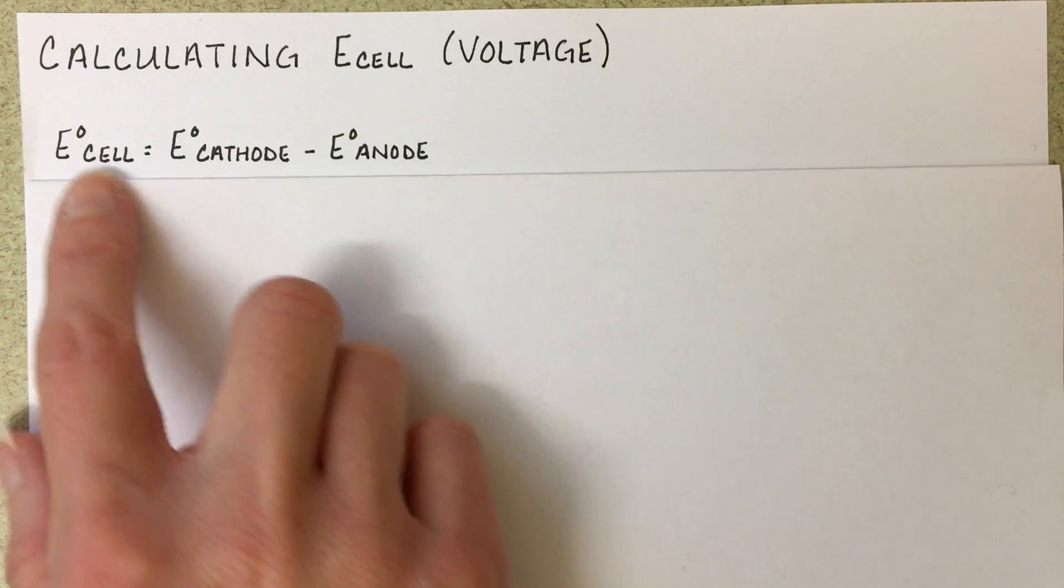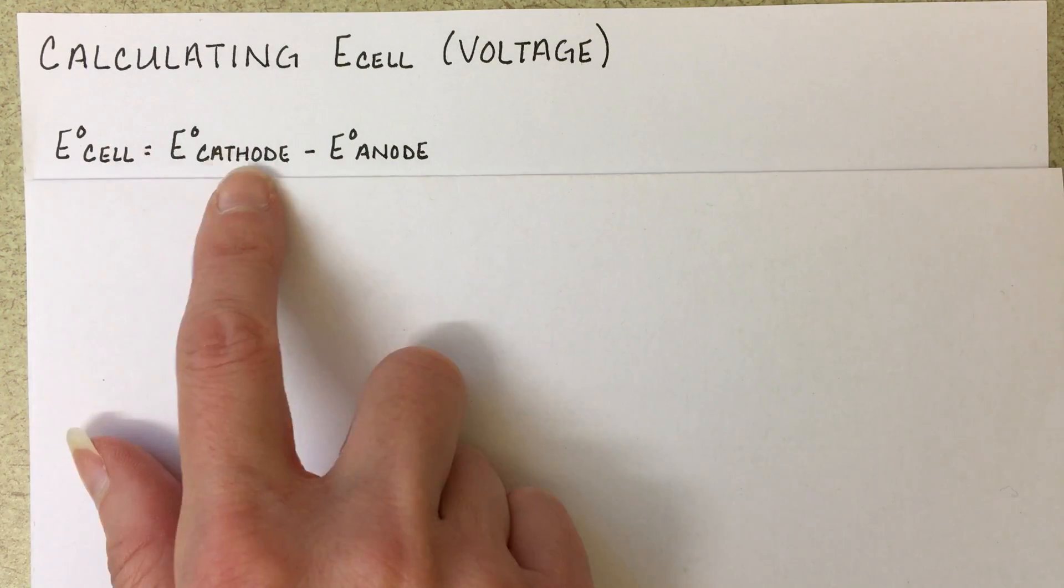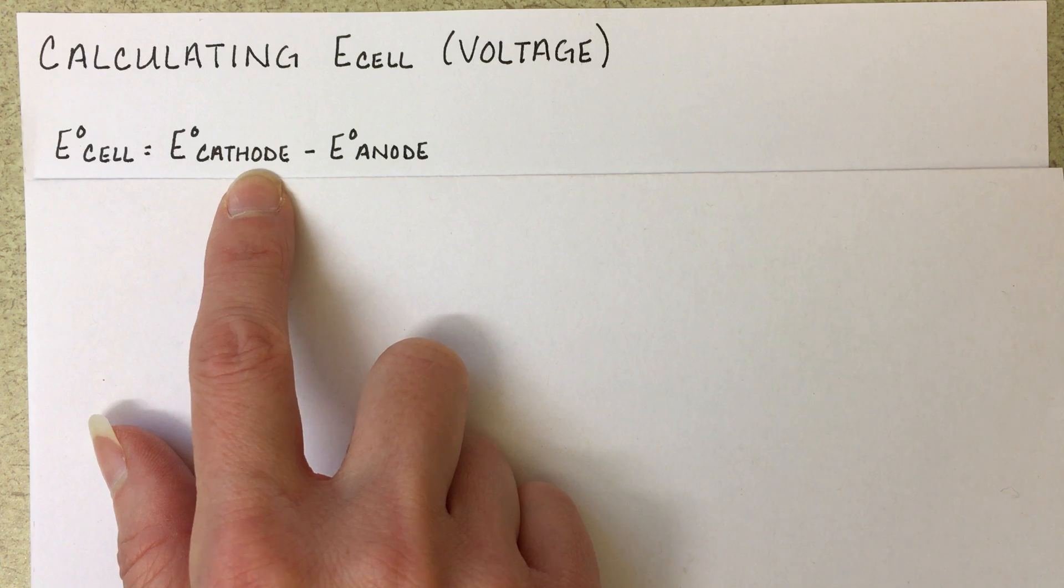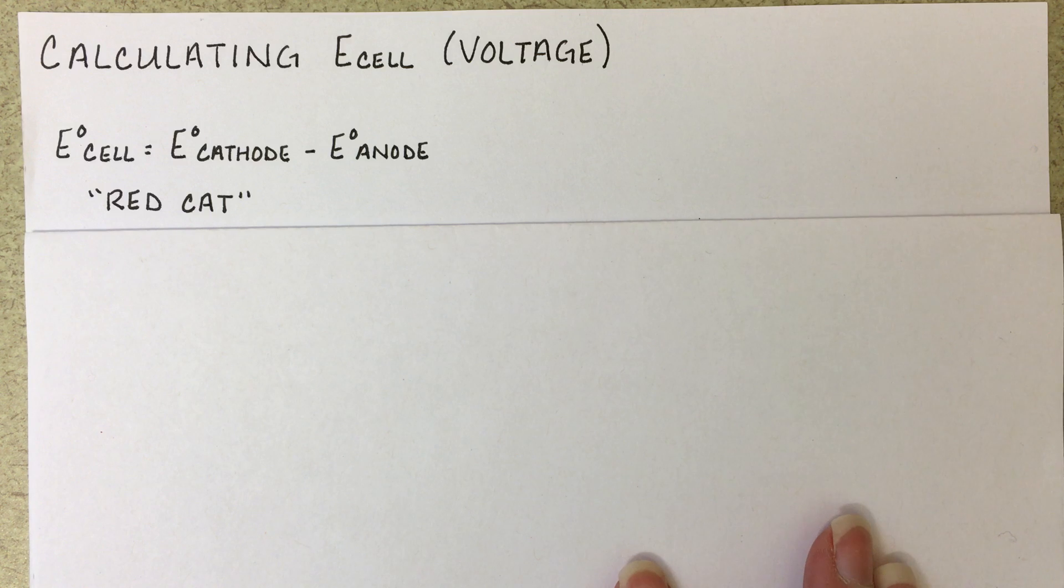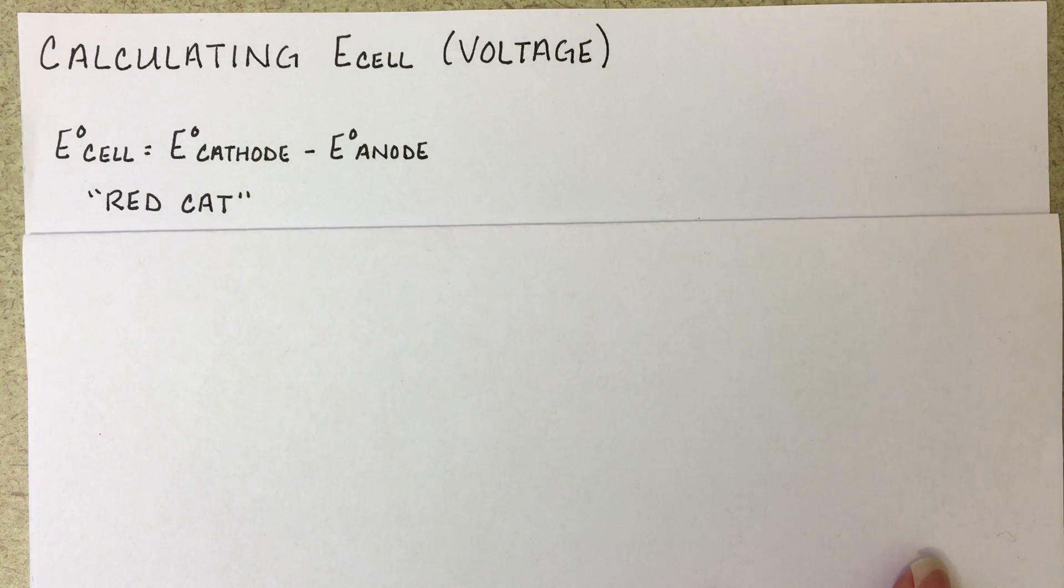In order to calculate the voltage of a cell, we need to consider the voltage at the cathode and the voltage at the anode. To help us figure out the cathode versus the anode in our cell, we're going to use the mnemonic REDCAT.